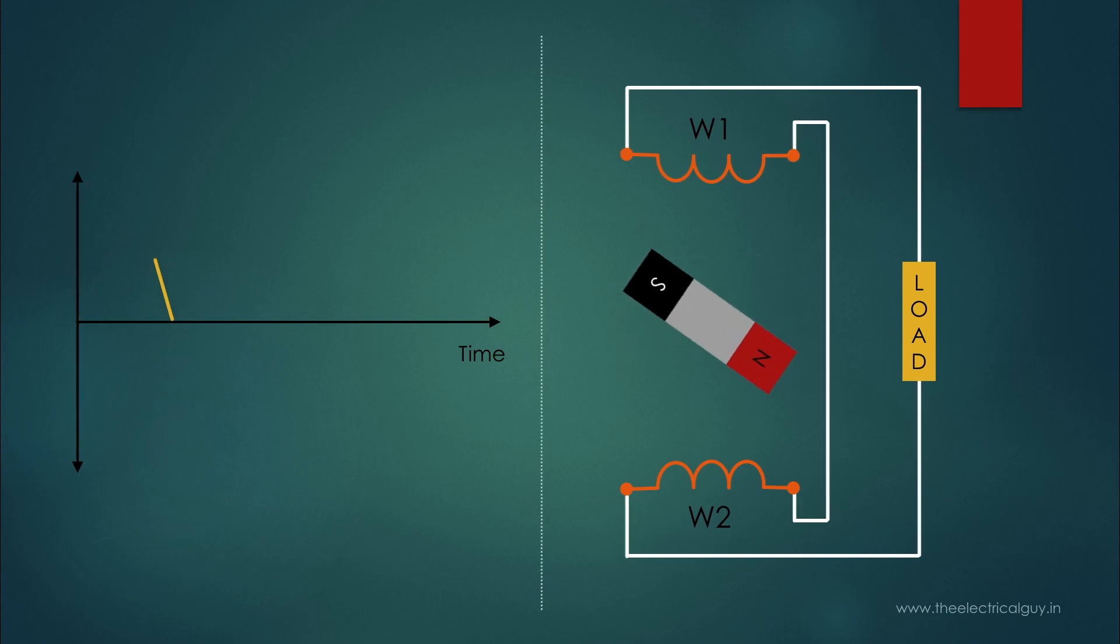When the magnet gets to position D, again the voltage becomes maximum but in the opposite direction. And in the next position, it gets to zero again. Now if you observe this waveform carefully, you will find that the voltage is changing its magnitude and direction periodically.